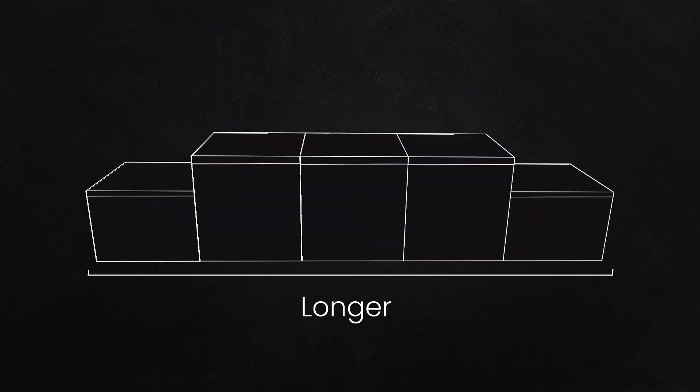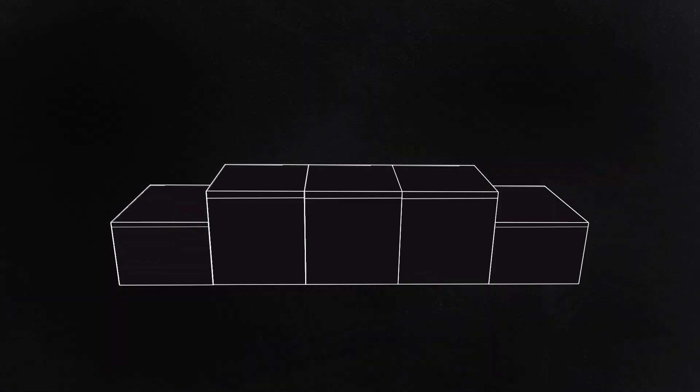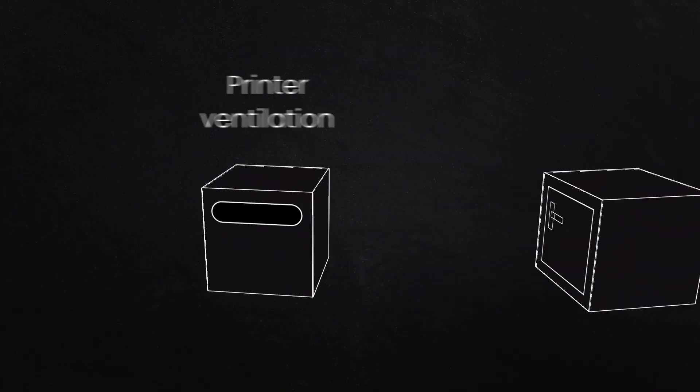Predetermined center modules, some shorter and some longer, as well as a set of various right and left wings with different lengths, widths, and heights, some with printer ventilation, others with storage, allowed for each fixture to be tailor fit.